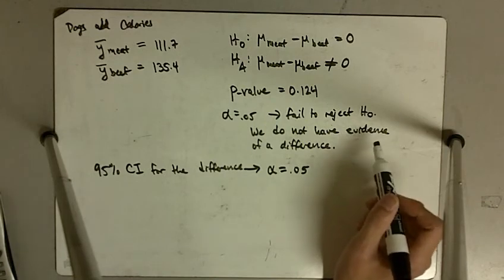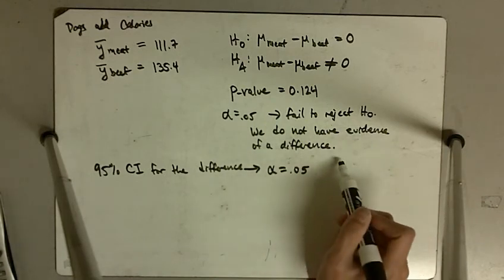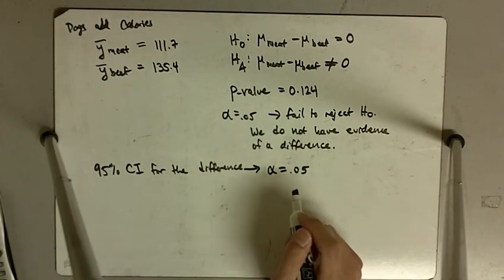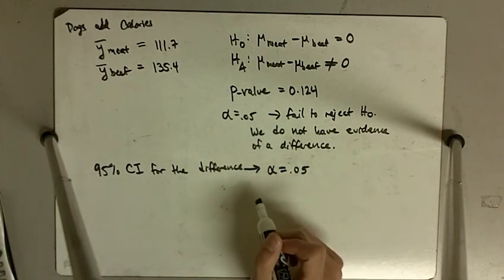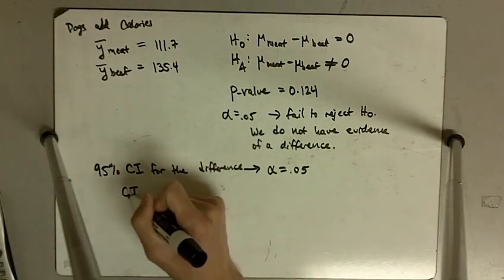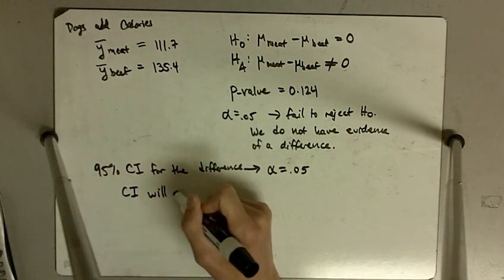At 5%, we did not reject the null hypothesis, meaning we did not have evidence of a difference. We should have the same conclusion when we find a confidence interval for the difference. So that means our confidence interval will not show evidence of a difference.